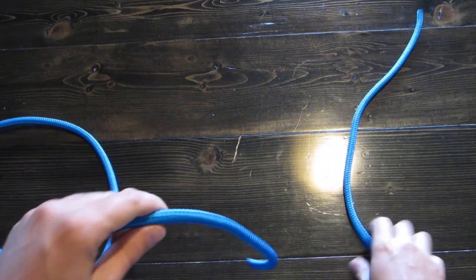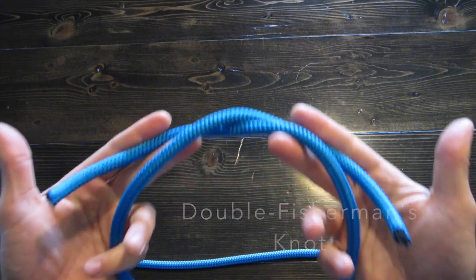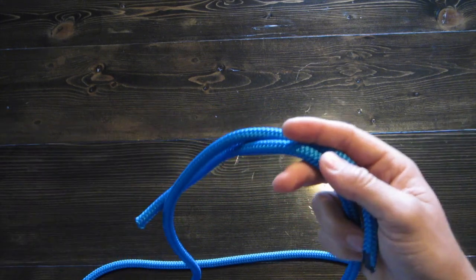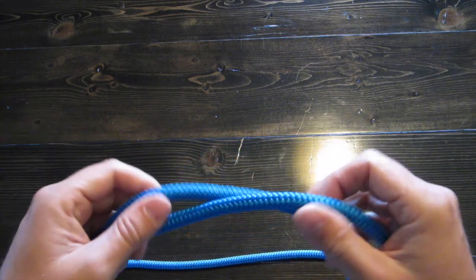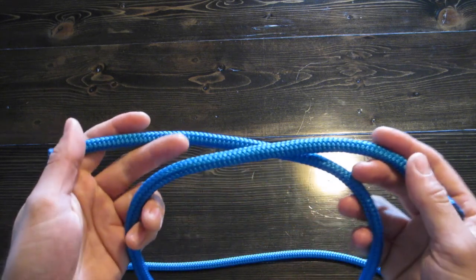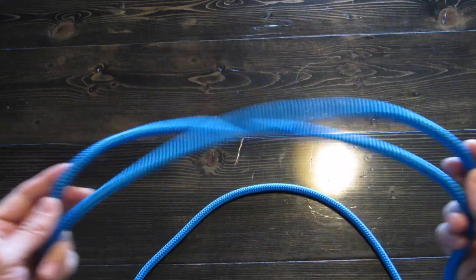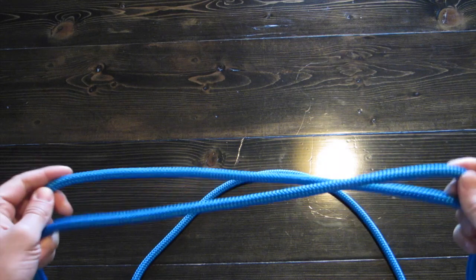Alright. So, the next one is just known as the double fisherman's knot. And it's a way to tie two ends together of separate ropes or two ends of the same rope together to make a big loop. This is also known as the grapevine knot. So, you take your ends and overlap them as such.